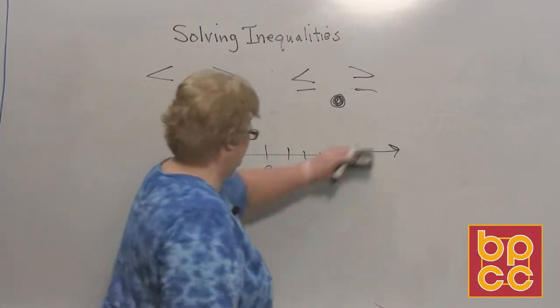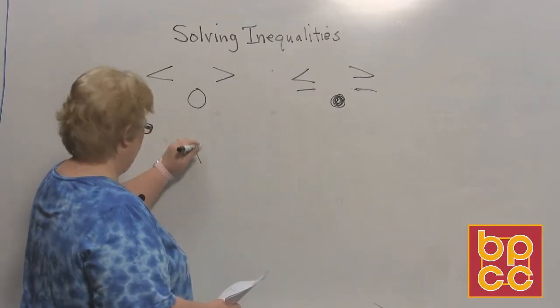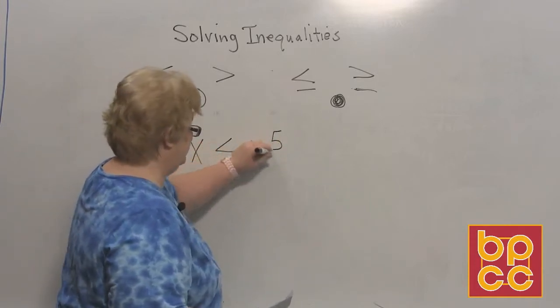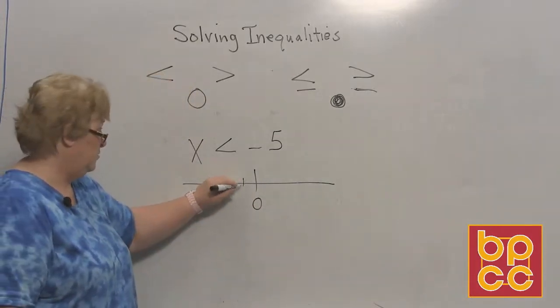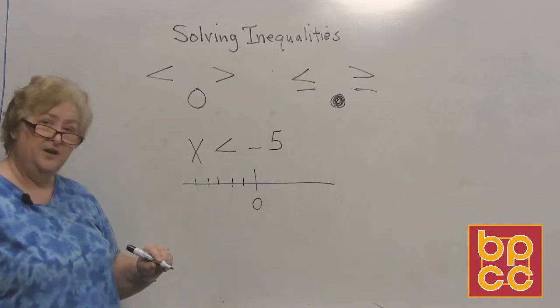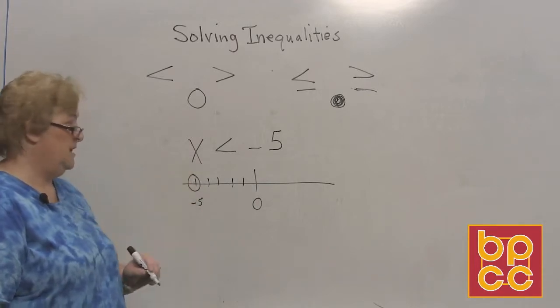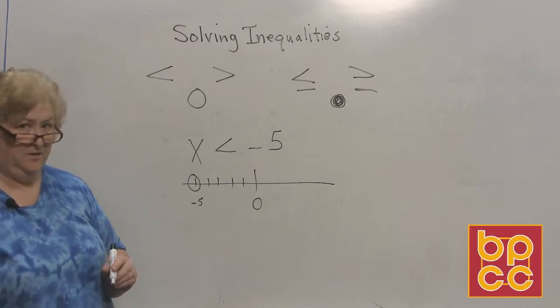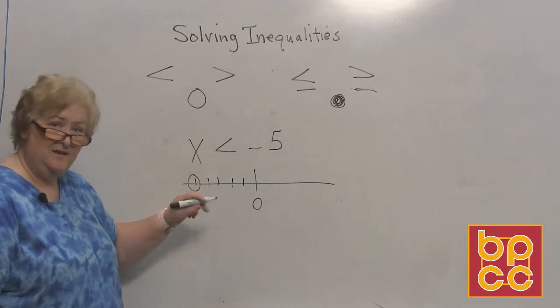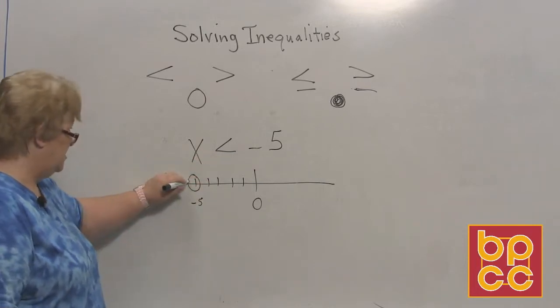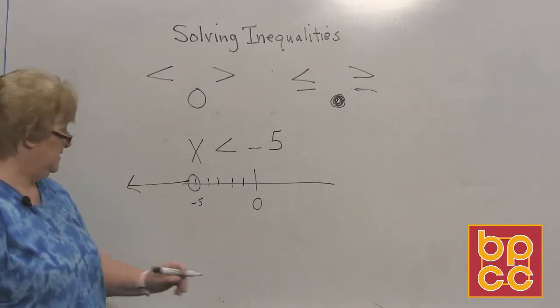Let's try another one. I think I'll do x is less than a negative 5. Here's your 0. First, we're going to go to negative 5. 1, 2, 3, 4, 5. Now, is it going to be an open or closed circle? It's going to be an open circle at the negative 5. Open circle. Now, read from the x side the relationship of x to the number. x is what? Less than. And on the number line, less than goes to the left. So, there's a picture representation of what that inequality says.